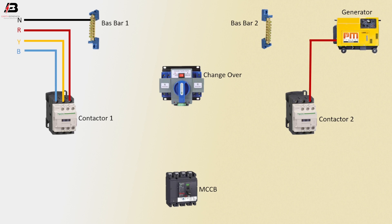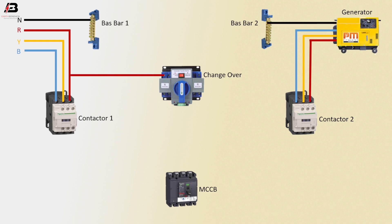Phase connection from generator to magnetic conductor two L3 terminal. Second phase connection from generator to conductor two L2 terminal. Third phase connection from generator to magnetic conductor two L1 terminal. Neutral connection from generator to bus bar. Phase connection to changeover. Neutral connection between two bus bars. Neutral connection to changeover neutral connection.